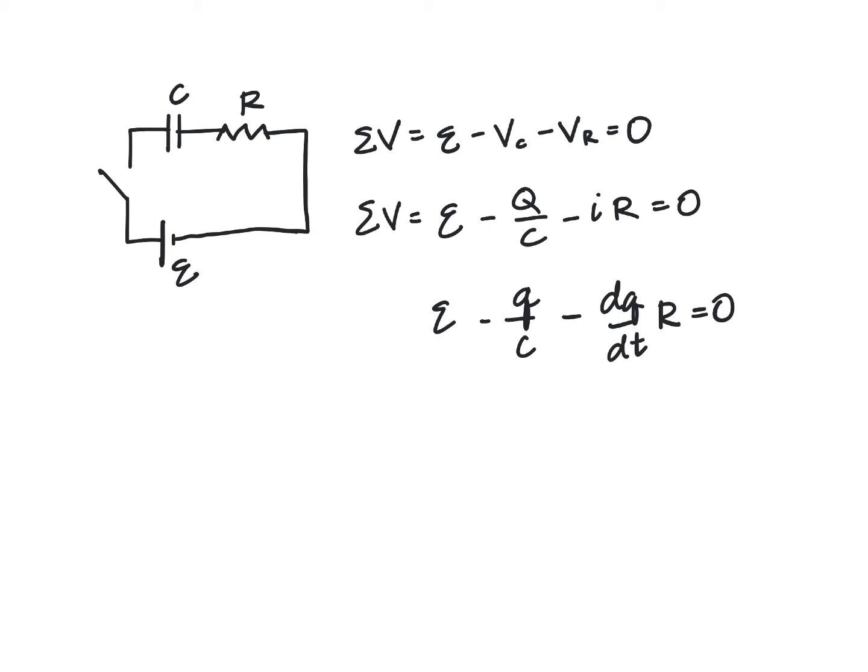Now let's take our EMF minus Q over C and set that equal to R DQ DT. Now I see that I have two variables in here and my Q and my Q are here, so I need to separate these variables. Let's multiply both sides by C. We would have C capacitance times the EMF, which is also the potential difference across the battery, minus now if we multiply Q over C by C we'll have Q, and then this will be R times C and then DQ DT.